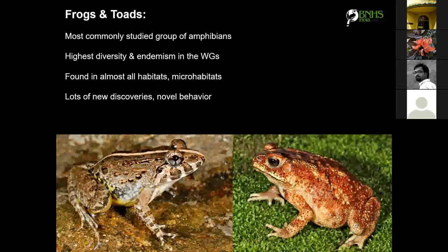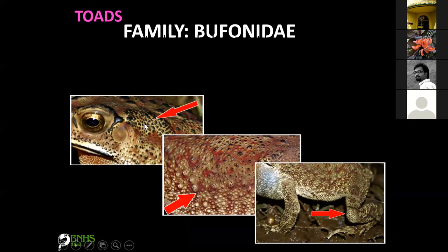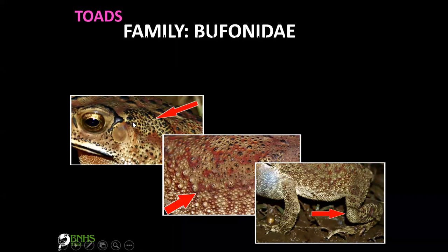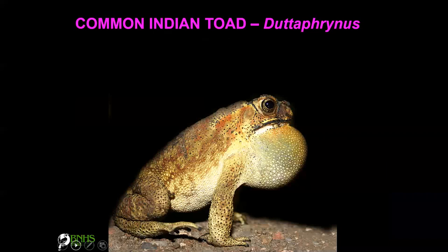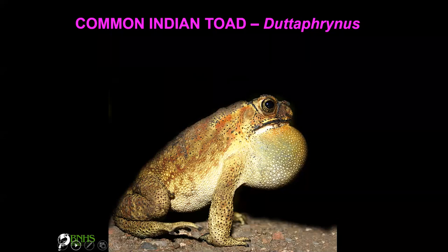To recognize toads, look for the parotid gland — a bulge or rack-like structure on the toad's head, near the eye or above the tympanum. Many people say these are poison glands, but they don't affect human beings — they only give a bad taste to predators, making these toads unpalatable and helping them escape. This common Indian toad is found everywhere in India.